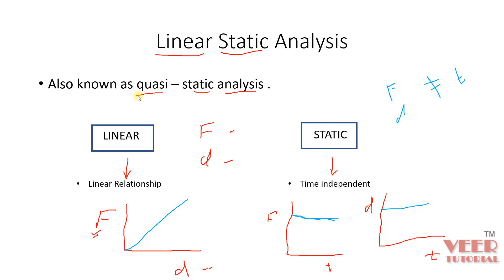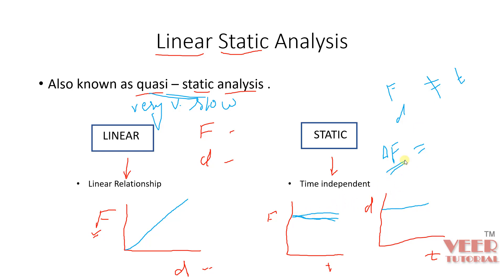Quasi-static analysis means a very, very slow process. In real life, there can be a change in force with respect to time. What the software does is consider that the change in force — delta F — is very close to zero, something like 0.001 or similar. So the process is very slow, meaning there is no significant change in the value of force. That is called quasi-static, and it is the basis of linear static analysis.